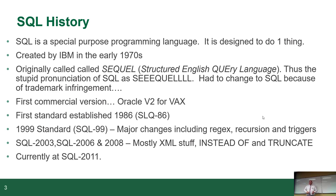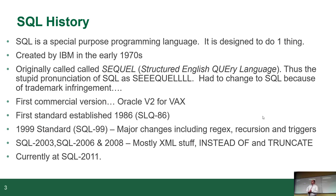Another example of a special purpose language is R, used specifically for statistics — a programming language made just for statistics. SQL is also a special purpose language. It was created by IBM in the early 1970s, so it's been around for a while.